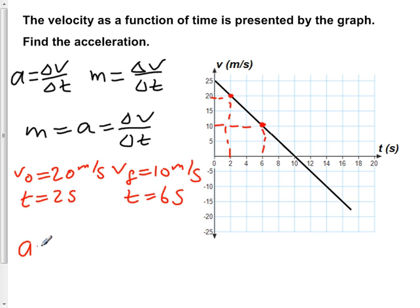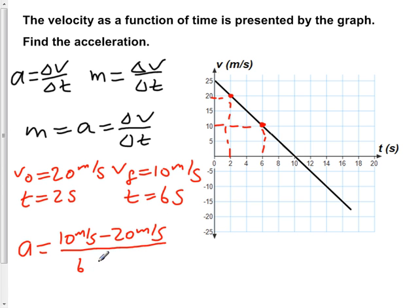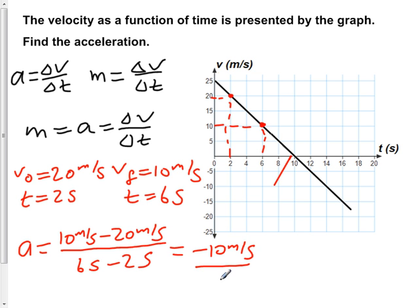So now if we solve for a, we would find that a is equal to 10 meters per second minus 20 meters per second, divided by six seconds minus two seconds, giving us negative 10 meters per second over four seconds, which gives us an acceleration of negative 2.5 meters per second squared.